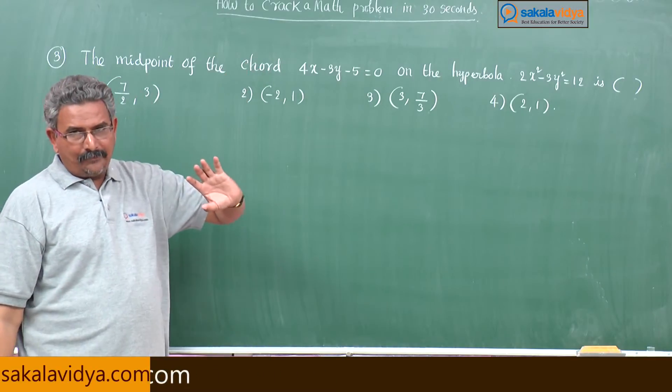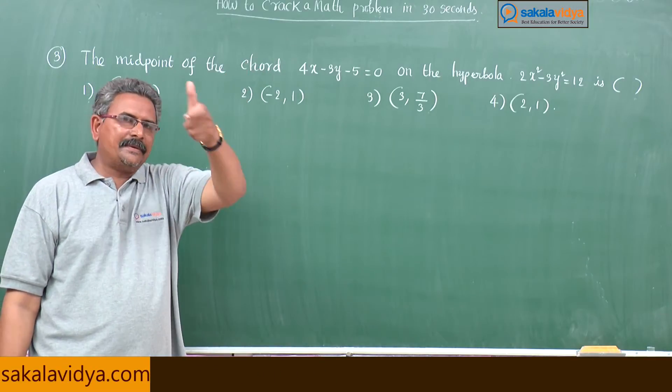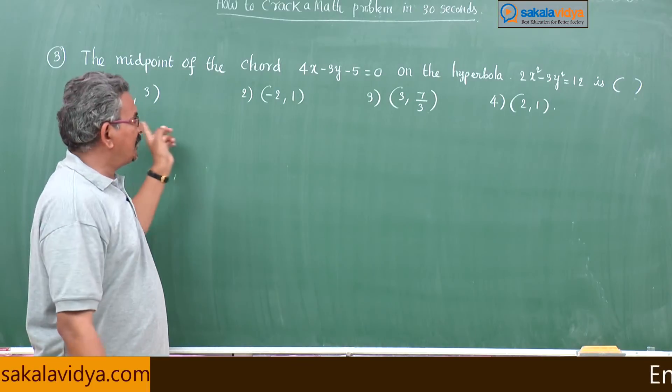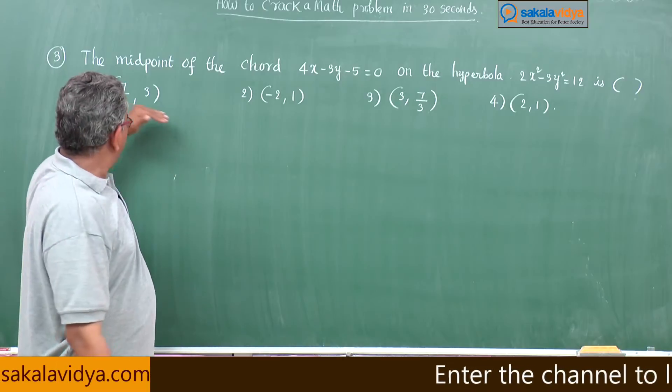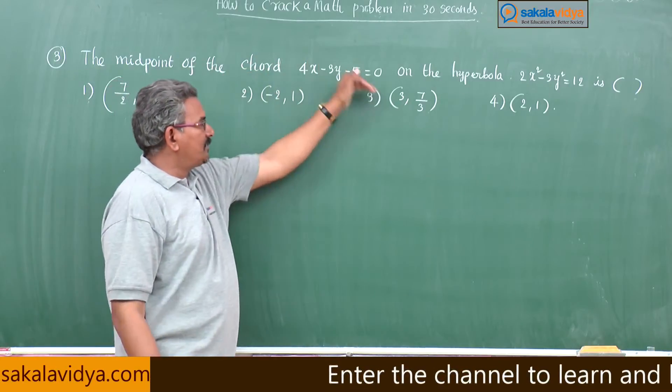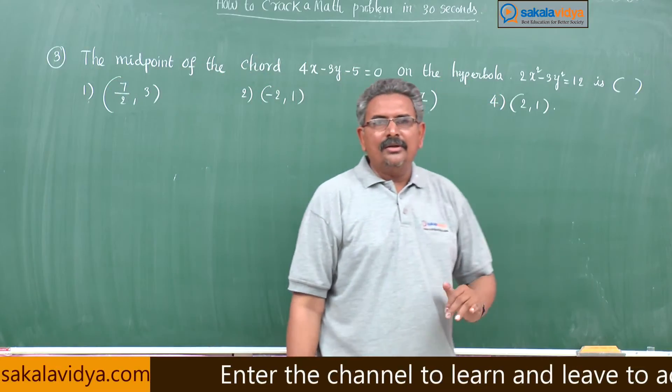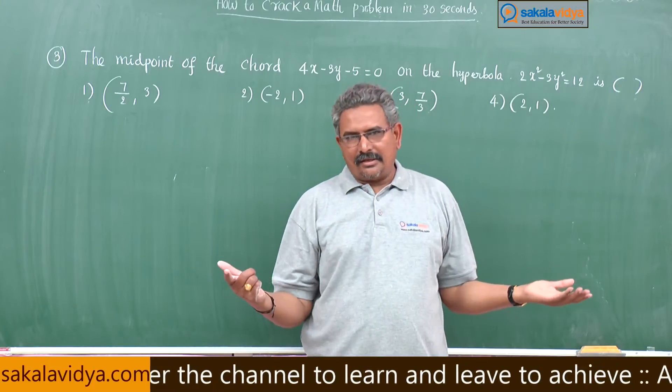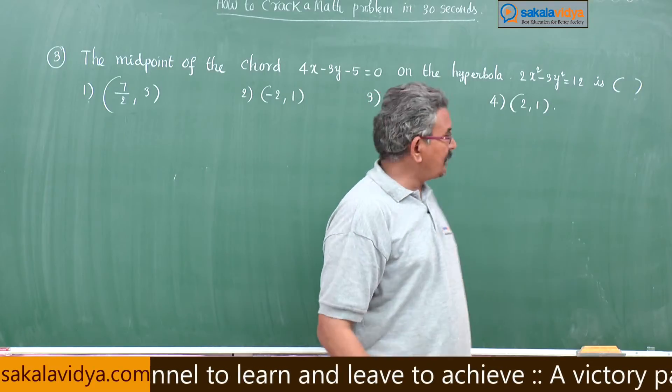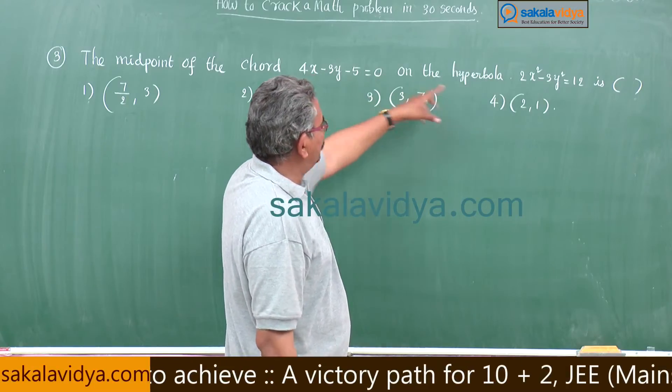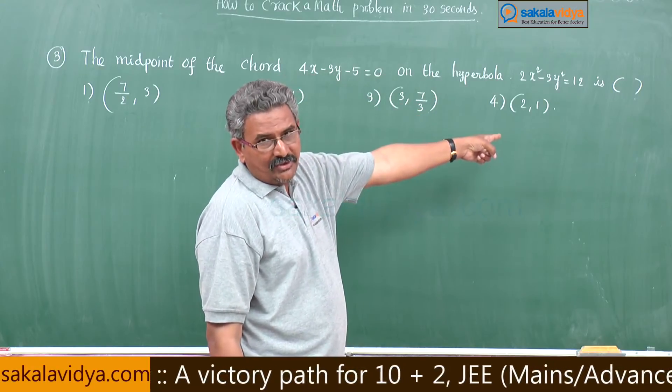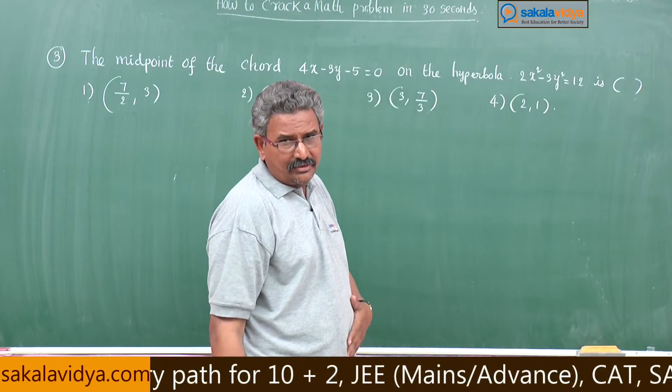Regarding this problem, this problem can be done by inspection also by using elimination of the options method. Substituting first option, second option, third option, fourth option which satisfies that will be the right answer. So first you take the last option: 4 times 2, 8 minus 3 times 1, 5 minus 5 equals 0. Yes, 2 comma 1 will be the right answer. So directly we can do like this also.